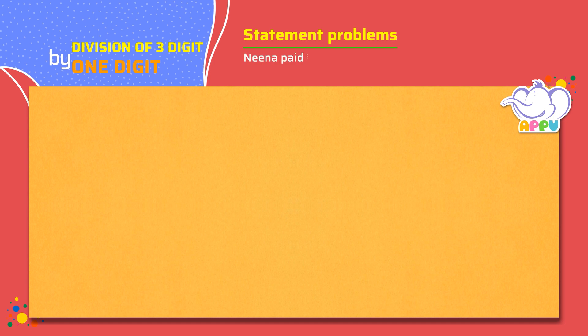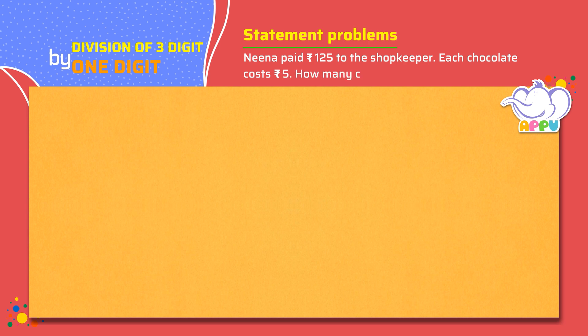Neena paid rupees 125 to the shopkeeper. Each chocolate costs rupees 5. How many chocolates did Neena buy?